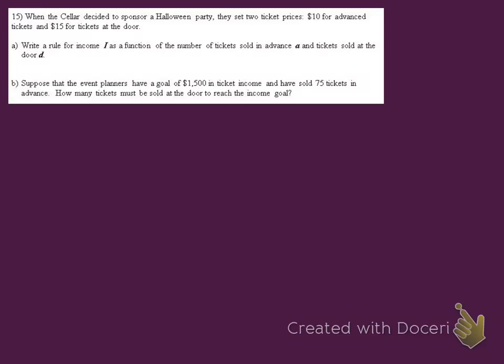Problem 15. When the seller decided to sponsor a Halloween party, they set two ticket prices: $10 for advance tickets and $15 for tickets at the door. We're supposed to write a rule for income as a function of the number of tickets sold in advance and tickets sold at the door. So first for letter A, we need to go ahead and write our rule.